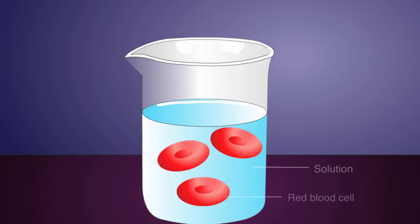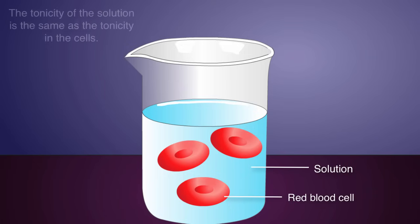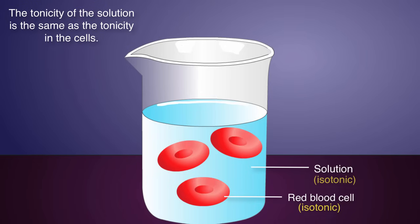If the red blood cells are placed in a beaker whose contents match the tonicity within the cells, then there is no net gain or loss of water. The environments within the beaker and inside the cells are said to be isotonic, or the same.